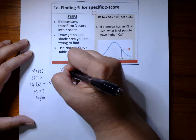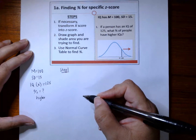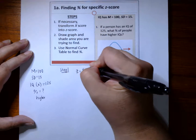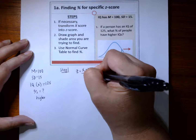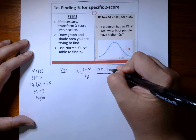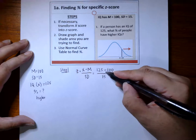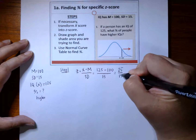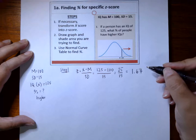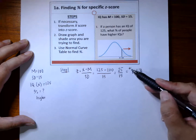Step 1: if necessary, transform the x-score into a z-score. Since we have an x-score here, we're going to use our z-score formula: z equals x minus m over SD. Plugging in the information: our x-score is 125, our mean is 100, and our SD is 15. 125 minus 100 is 25, and 25 divided by 15 gives us a z-score of 1.67. It's a plus because it's above the mean.